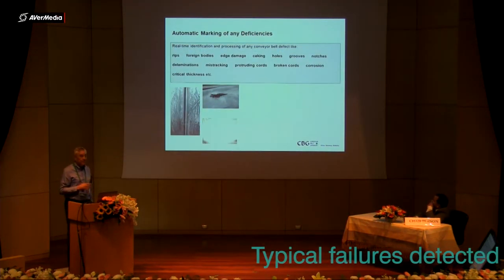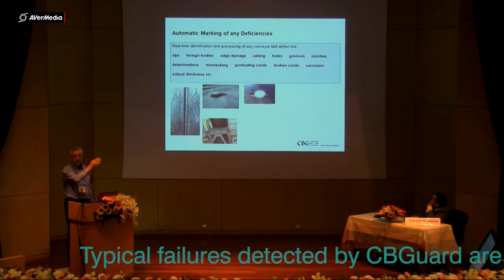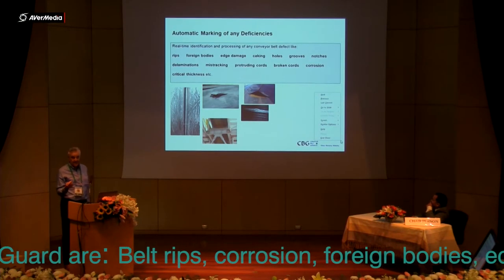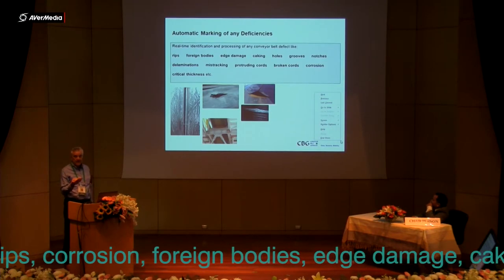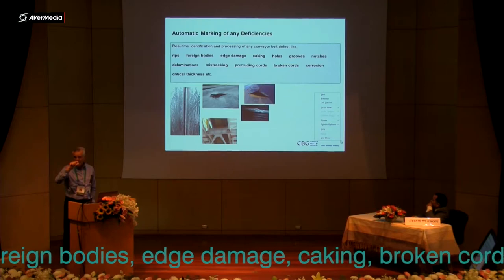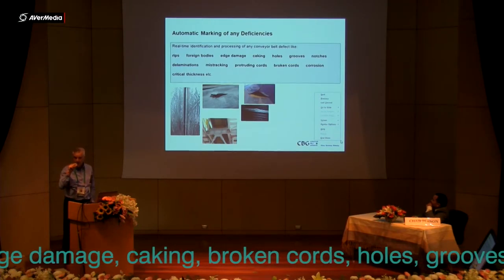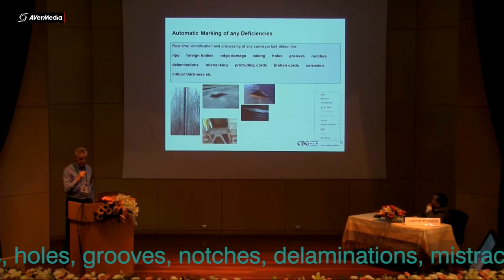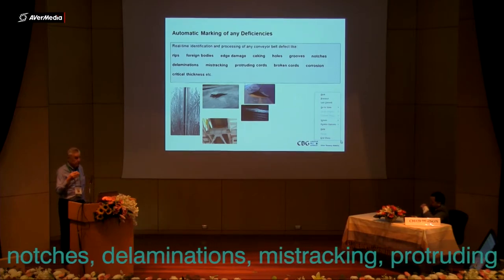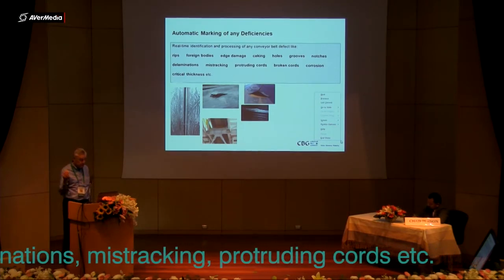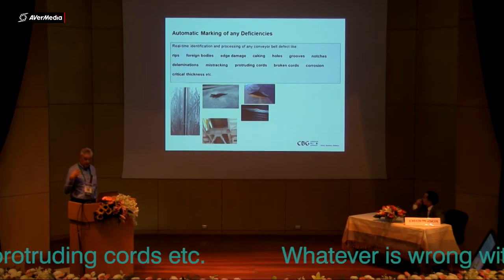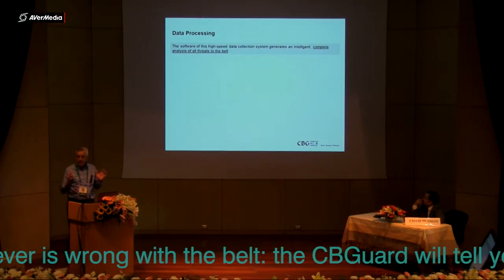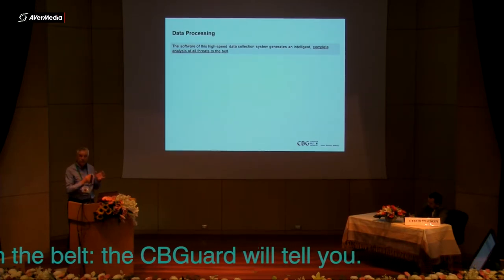What are the problems that the system will detect? They include longitudinal ripping, inclusions, foreign bodies, edge damage, and even caking — meaning buildup on the belt — which signals that you need to improve your scraper system because the belt is not clean. It also detects holes of any kind, grooves, notches, delaminations, protruding cords, broken cords, and corroded cords. Whatever is deviating from the wanted condition of the belt will be signaled.